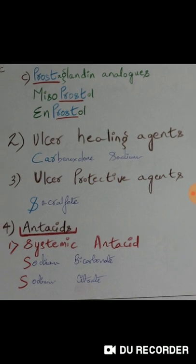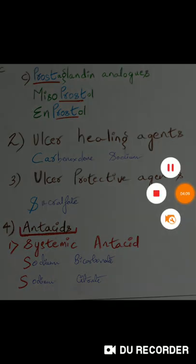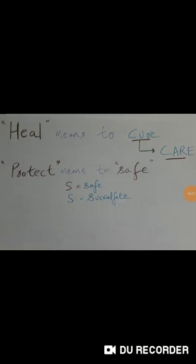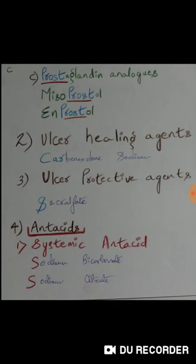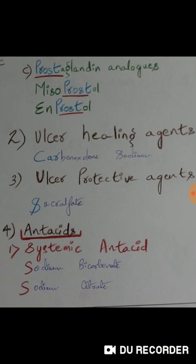Number two is ulcer healing agents and number three is ulcer protective agents. Healing means the ulcer has already occurred, while protective means you are preventing it before it occurs. For ulcer healing agents, remember that 'heal' means to cure — and 'cure' sounds like 'car' (C-A-R). So look for carbenoxolone sodium under ulcer healing agents.